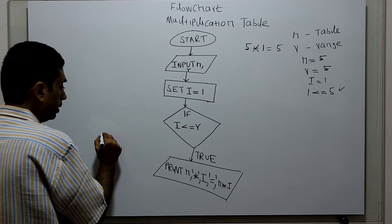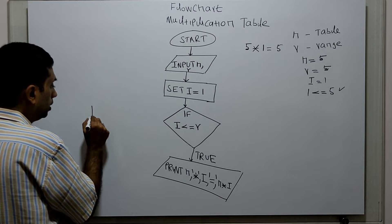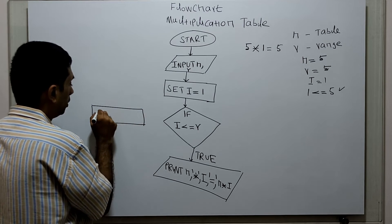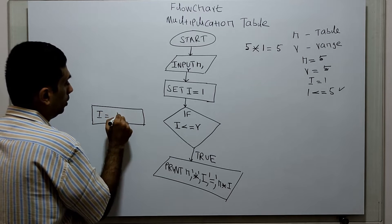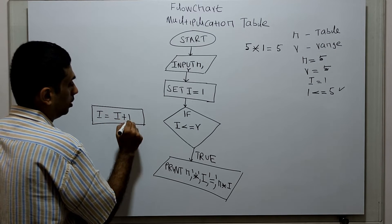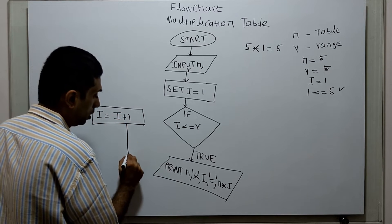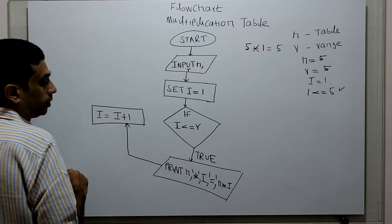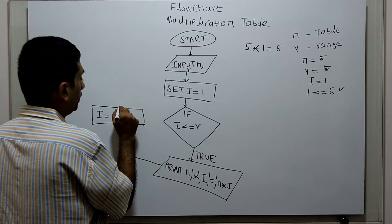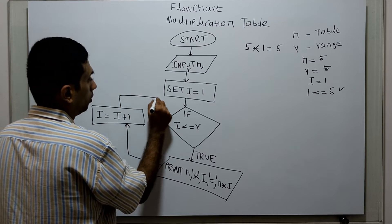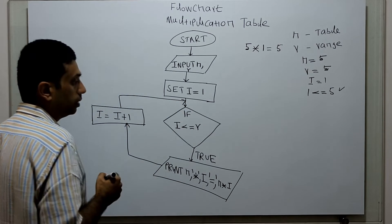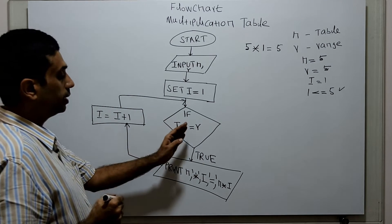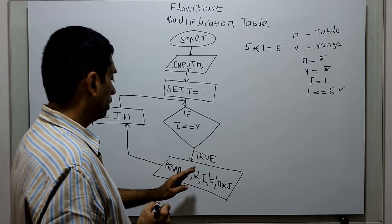Next I am incrementing i by 1: i equal to i plus 1. I am writing the flowchart back to the decision statement — it works like a loop. If i less than or equal to r is true, then we print n, the multiplication operator, variable i, the equal to symbol, and n times i.